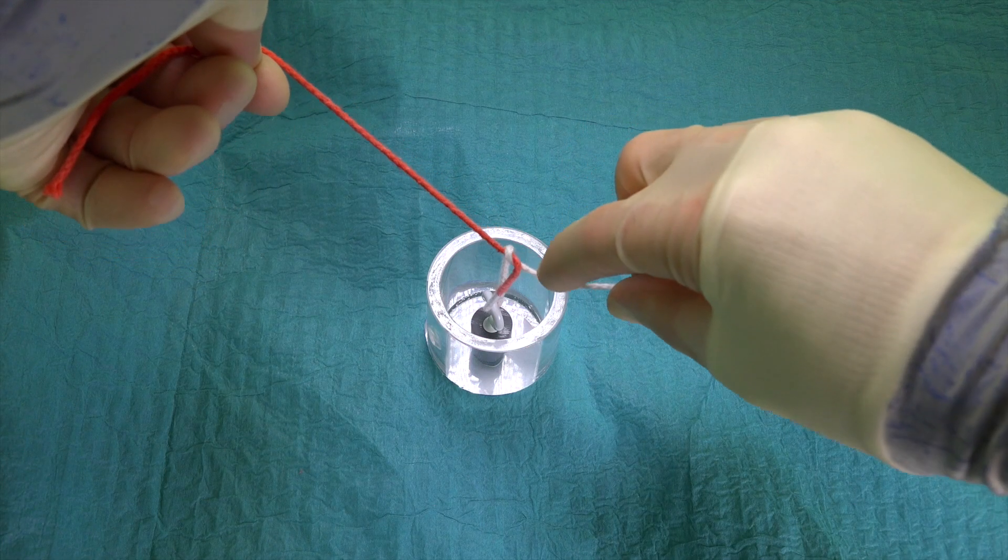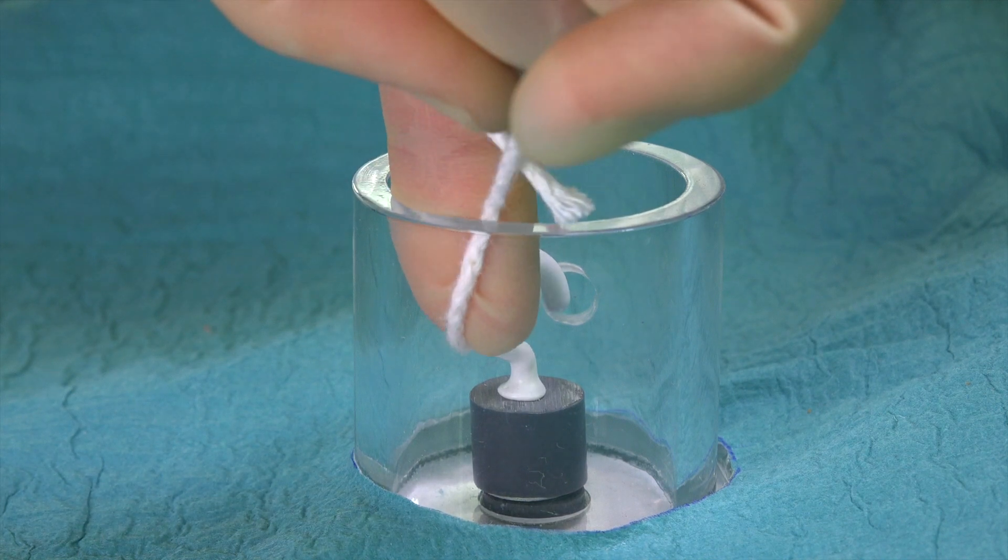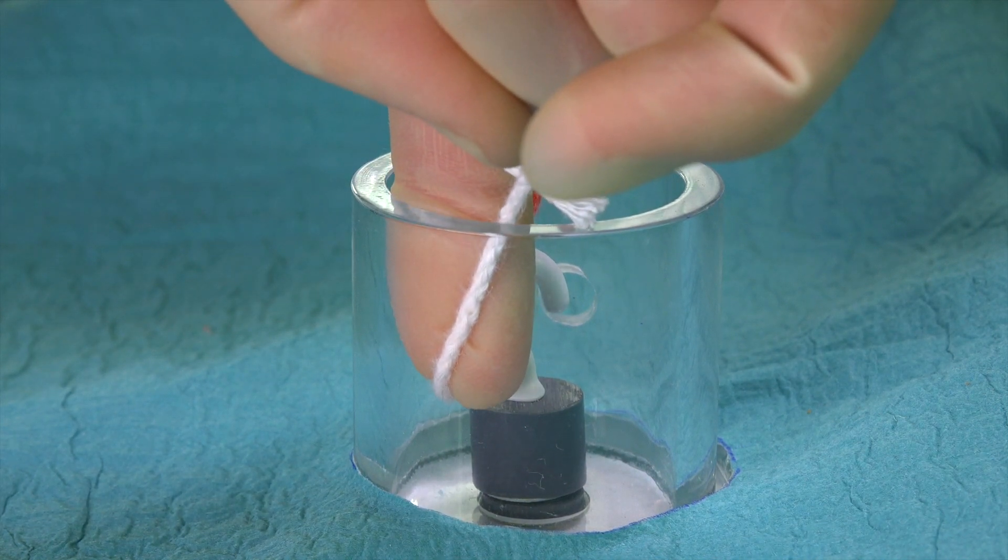We can see how the right index finger is used to gently lay each of the throws down by pressing beyond the hook and not directly onto it.